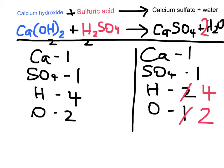A useful tip: always leave a little space in front of each compound as you write the equation, so that if you need to add a balancing number later, you have room. Remember, the balancing number must go in front of the compound — you cannot put numbers within a compound, as that would change the chemical structure and the ratio of the ions. All we're doing is saying we have multiple copies of that particular compound.